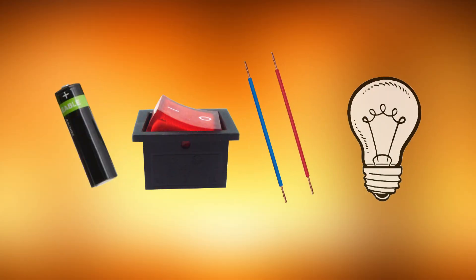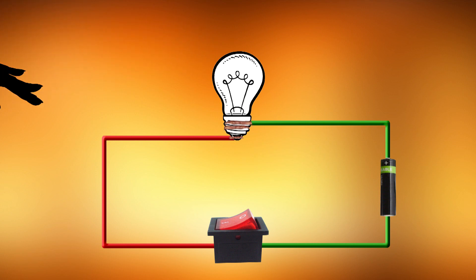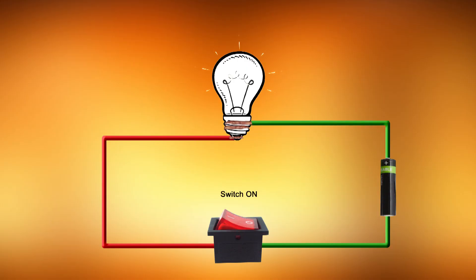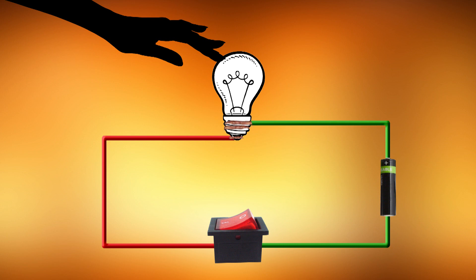For activity number two, I have taken an electric cell, a switch, connecting wires, and an electric bulb, and made a circuit. Before putting the switch on, touch the bulb — it is at room temperature. Now put the switch on and leave it for a few seconds. When switched on, the element becomes red hot and gives out heat. Switch off and touch the bulb — it has become warm. An electric bulb is used for light, but it also gives heat, which is not desirable and results in the wastage of electricity.